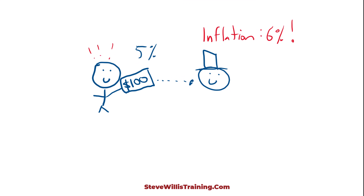I am going to take my required return on the loan — that is 5% — and add 1 to that: 1.05. I will multiply that by the general inflation rate with the 1 in front of it: 1.06. I will do the math, and I will get 1.113.